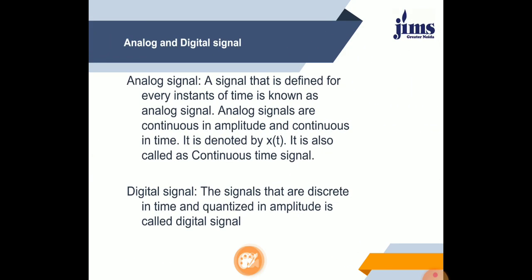There are various types of signals, like analog and digital signals. First of all we discuss about analog signal. A signal that is defined for every instant of time is known as an analog signal. For example, the temperature of day or night — we can measure the temperature at every instant of time, which is why temperature is an analog signal.